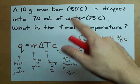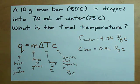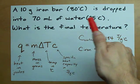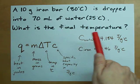A 10 gram iron bar, which starts out at 80 degrees Celsius, is dropped into 70 milliliters of water, which starts out at 25 degrees Celsius, and we want to know the final temperature.